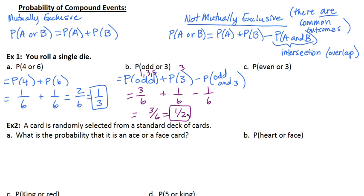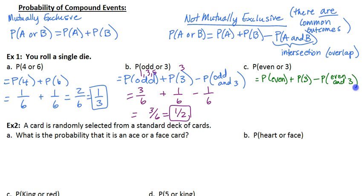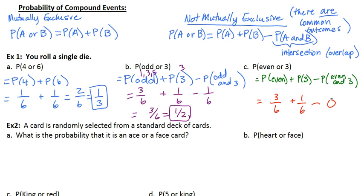Example C: I want the probability of even or a 3. You can always set yourself up: probability of even plus probability of 3, subtract the probability of an even and a 3 at the same time. There are 3 evens: 2, 4, and 6. There is one 3. But there are no even numbers that are also 3s, so that intersection is just 0. You can always get yourself set up if you're not sure, and then fill in the probability later. 3 over 6 plus 1 over 6 ends up being 4 sixths, so my final answer is 2 thirds.